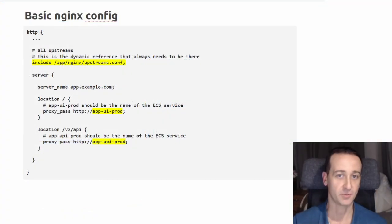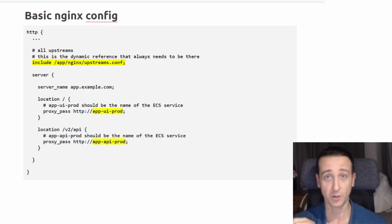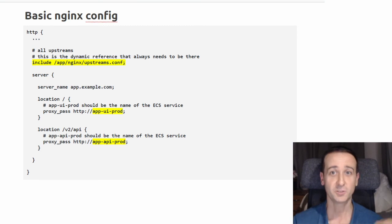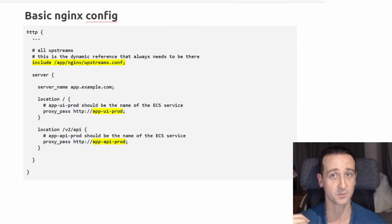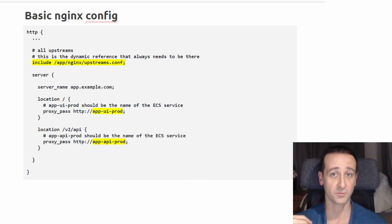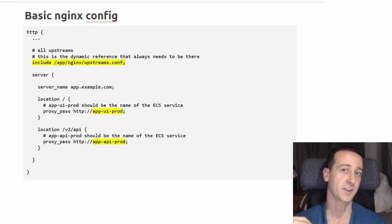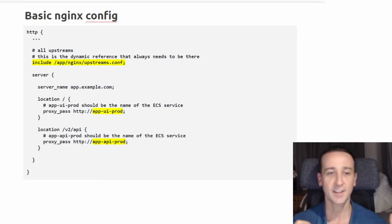Let's look at the basic configuration file. If you're familiar with Nginx and how it's configured, this example shouldn't scare you. The key areas to highlight are: the upstream configuration file that is continuously updated and kept up to date by ECS Ingress, and the fact that this upstream configuration file defines an upstream for each service in your ECS cluster. These can be referenced by name using the server name in your proxy_pass configuration elements — so it's very simple.